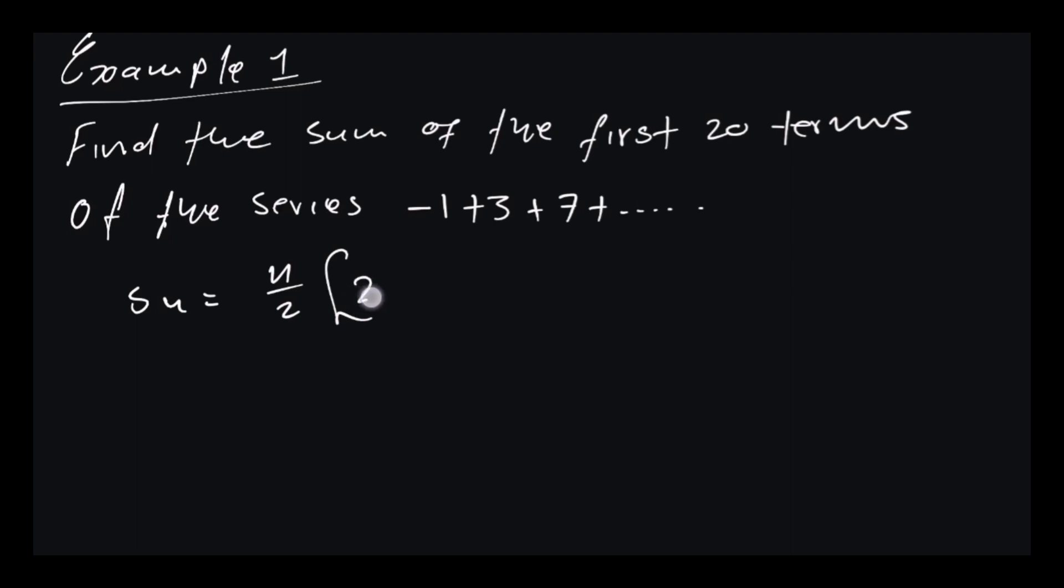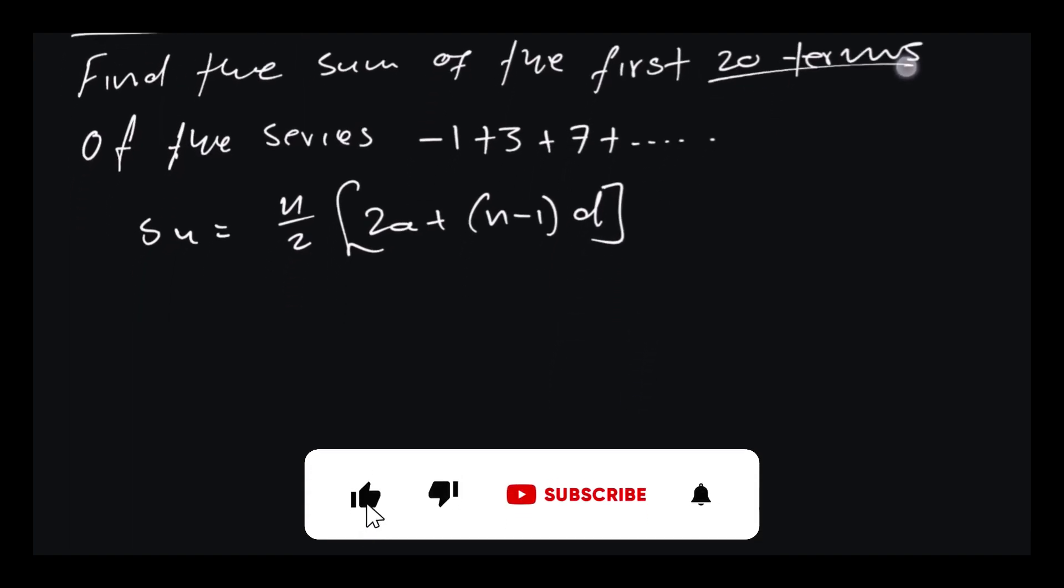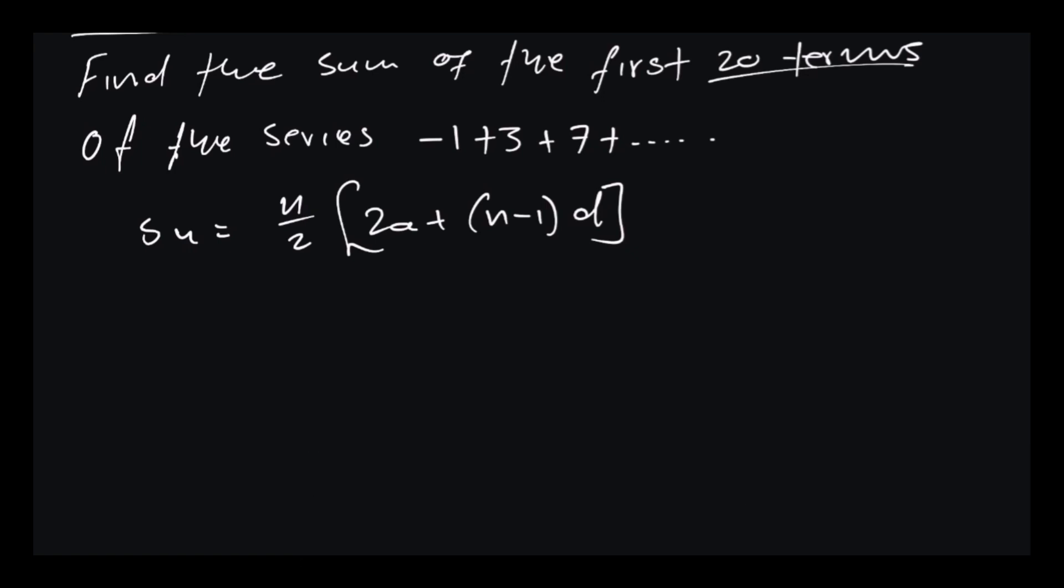So we are told that we need to find the sum of the first 20 terms. So what is this 20? This 20 is our n, so n equals 20. What do we need again? We need a, which is given. We need the difference. The difference in this case is equal to 3 minus -1, which is equal to 4. So our difference is equal to 4. Great, now let's find our Sn. That's equal to our n, which is 20, divided by 2, times 2 times -1, plus n which is 20 minus 1, times d which is 4.